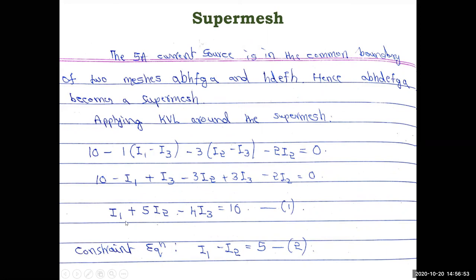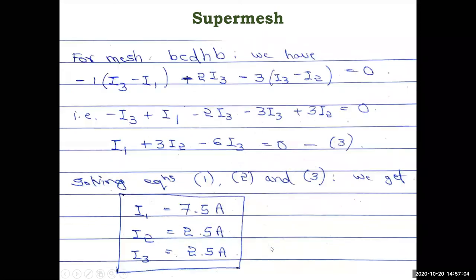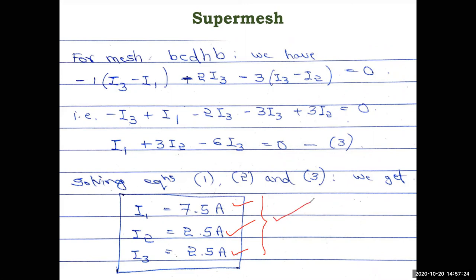Using the calculator in equation mode with: a1=1, b1=5, c1=minus4, d1=10; a2=1, b2=minus1, c2=0, d2=5; a3=1, b3=3, c3=minus6, d3=0 — you get i1=7.5 amps, i2=2.5 amps, i3=2.5 amps. The concept of super mesh is now clear.